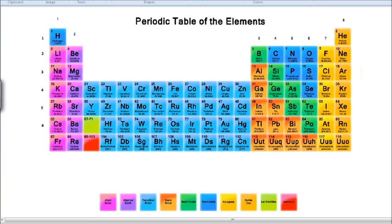The first thing we need to know when understanding the periodic table — the names are all colour-coded just for you to be aware — but the first thing you need to be aware of are the numbers 1 through 8 going down. Those things which go down are called the groups. So the groups go down: group 1, group 2, etc.